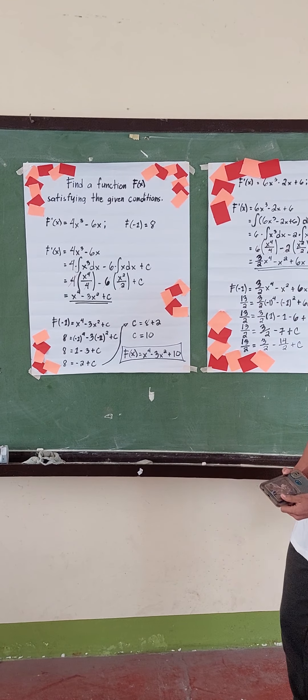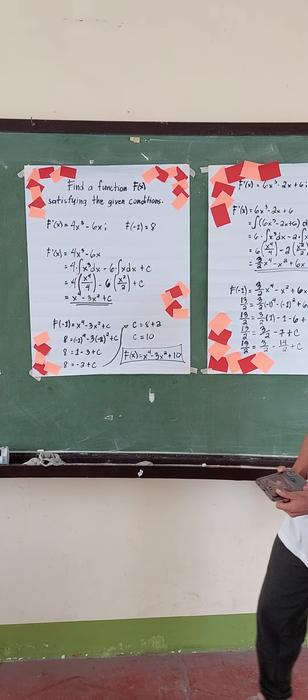Now let's simplify — cancel the 4. So we have x to the 4th, and 6 divided by 2 is 3. So we have x to the 4th power minus 3x squared plus c.